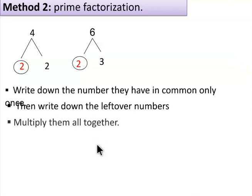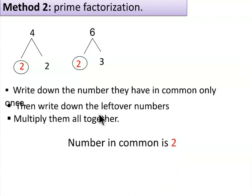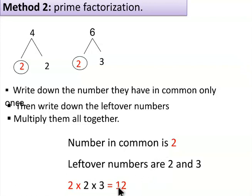Then write down the leftover numbers. Now multiply them all together. Here, the number in common is 2. Leftover numbers are 2 and 3. 2 times 2 times 3 equals 12.